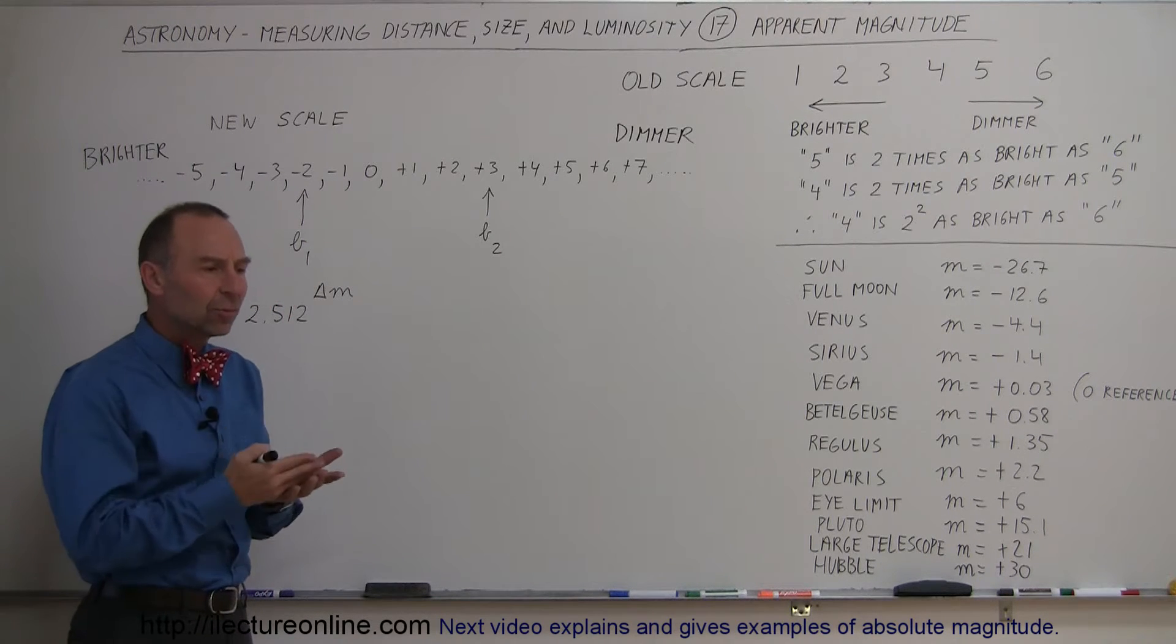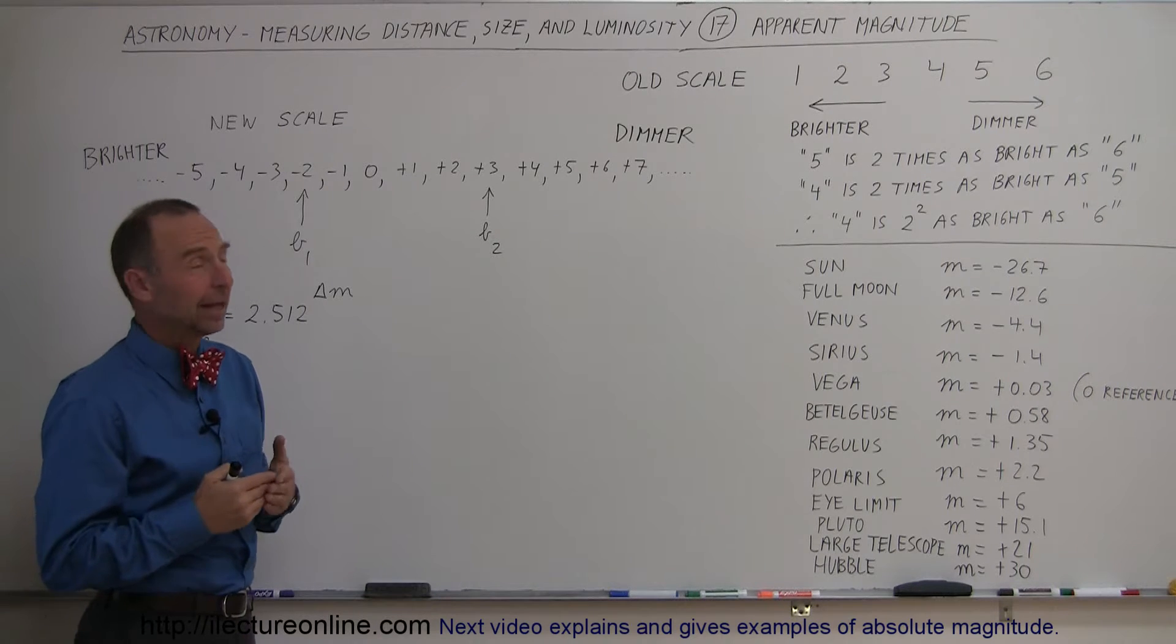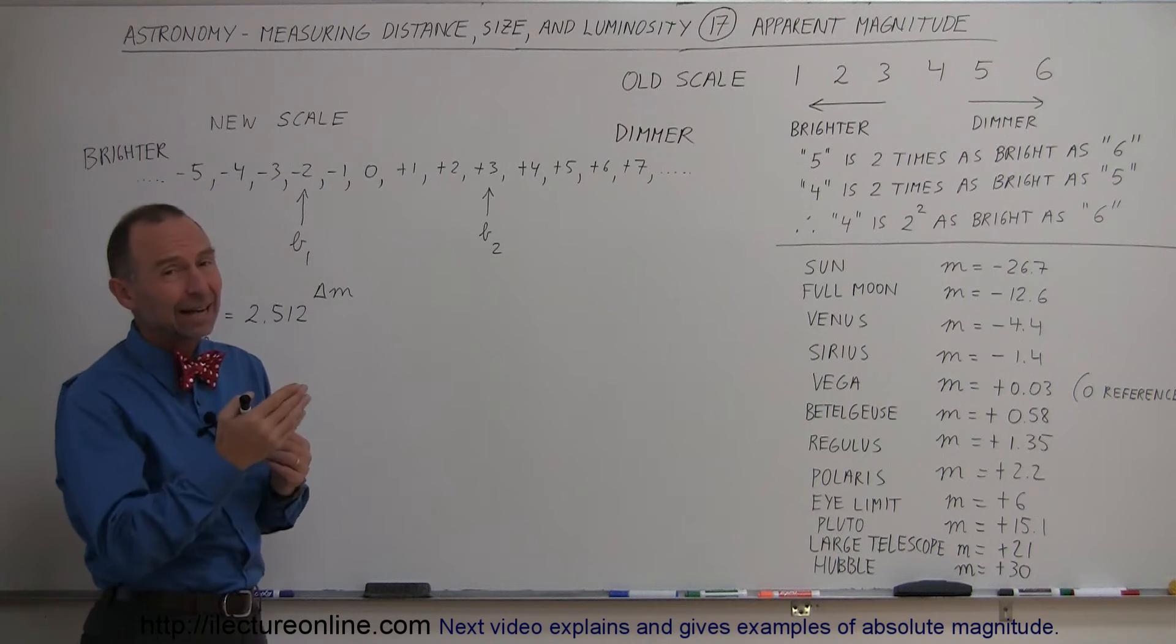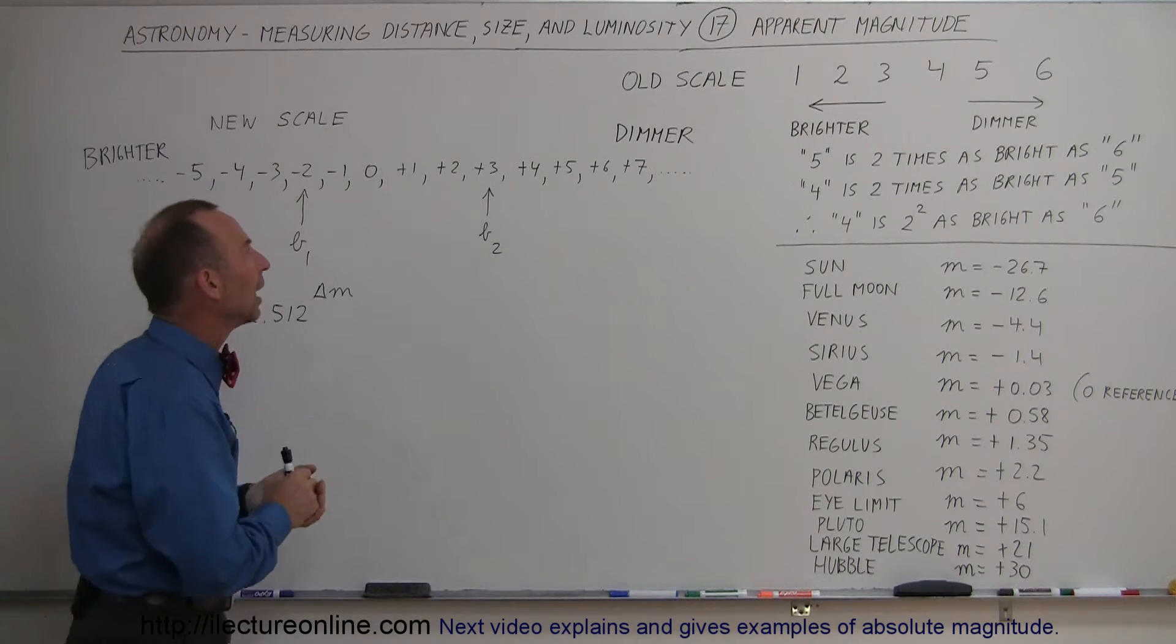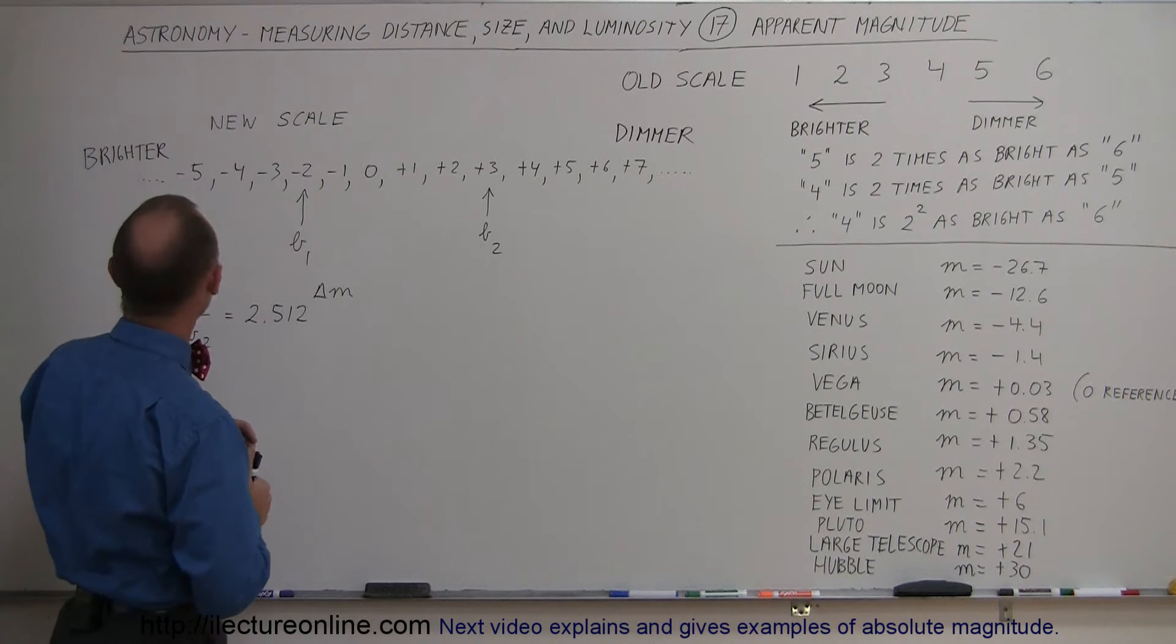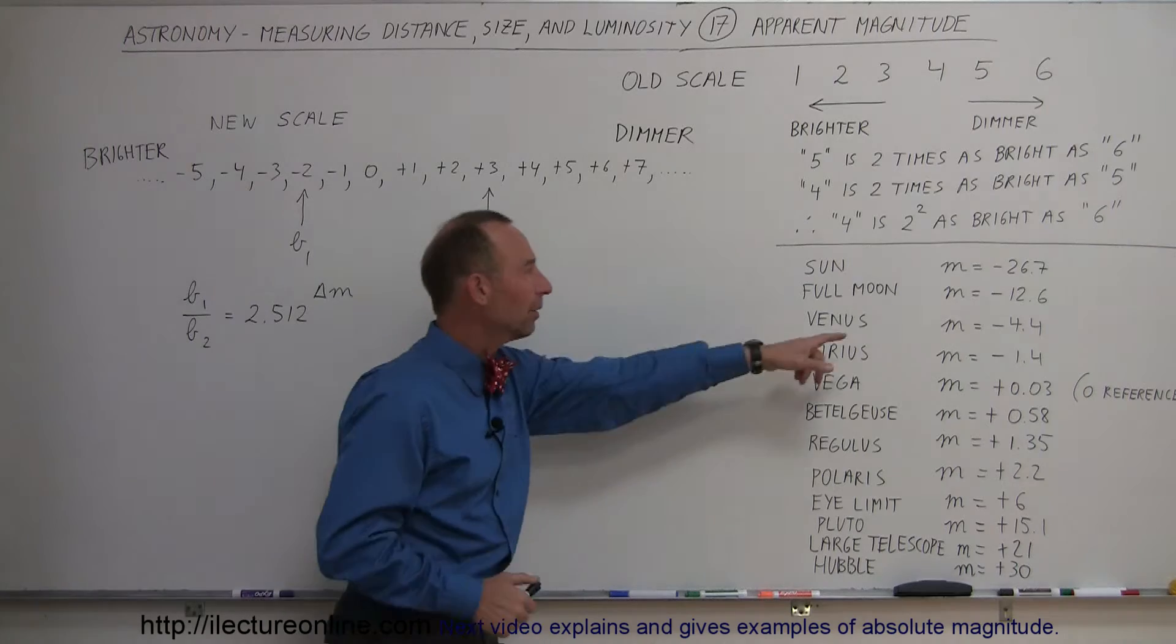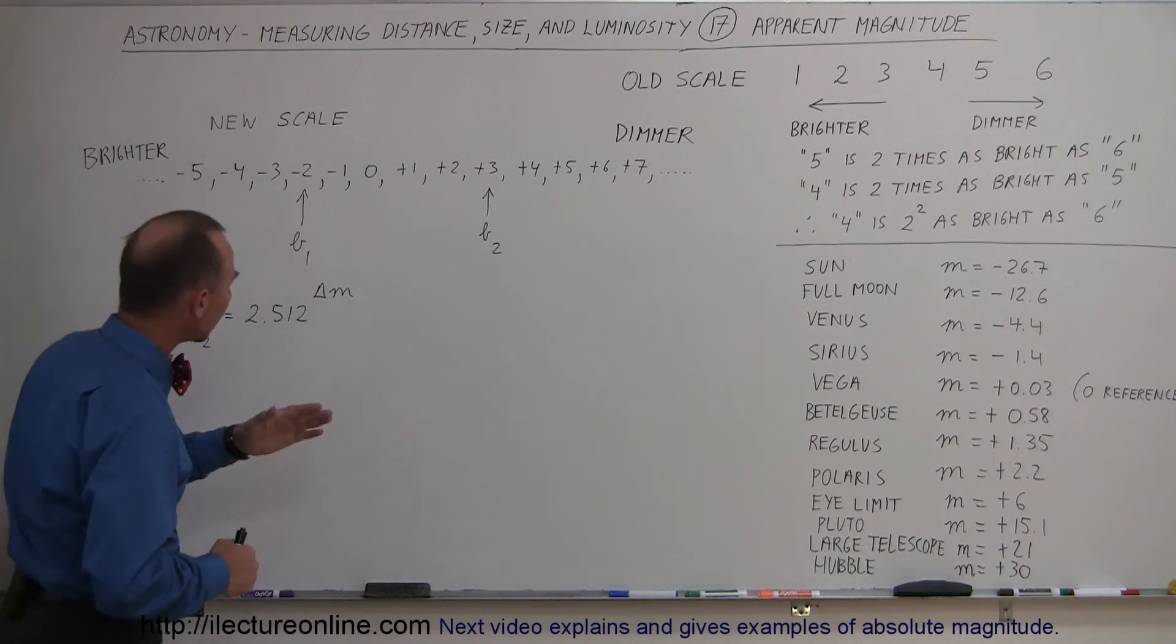With modern instruments and with telescopes, we began to realize that that scale really didn't work very well, and the estimations with the naked eye really didn't give us a good idea of how bright it was. So we came up with a new magnitude scale, and we called it the Apparent Magnitude Scale, and we used a small letter m to indicate that's the apparent magnitude.